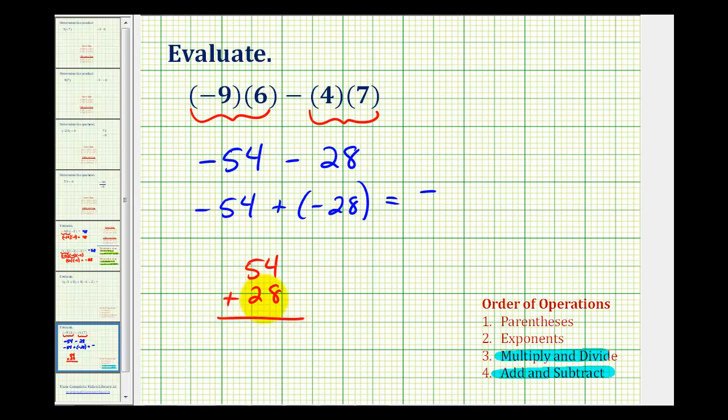Again, we're adding their absolute values because we're summing integers that have the same sign. So we have 12, carry the 1. So the sum will be negative 82.